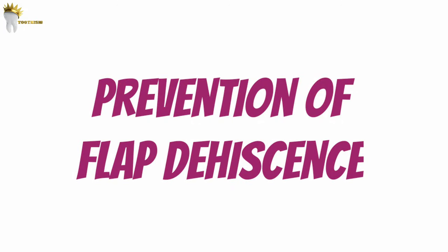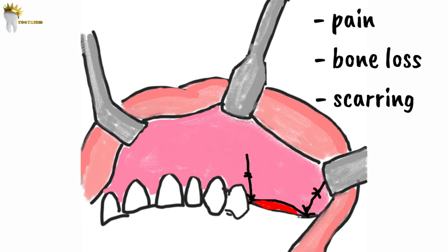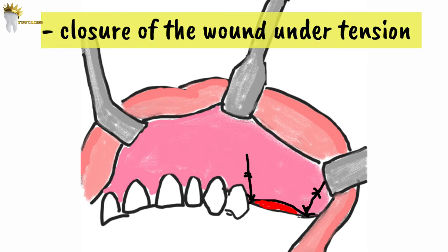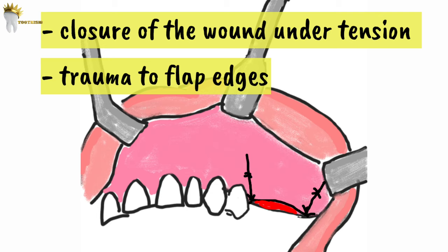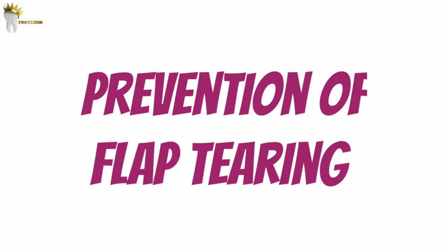Flap dehiscence means opening of the surgical wound edges, exposing the underlying bone and tissues, which can result in pain, bone loss, and increased scar tissue. Causes include closing the wound under tension, traumatized flap edges, or flap edges not resting over healthy bone. To prevent flap dehiscence, flap tissue should always be handled gently and the edges of the flap should rest on healthy bone.